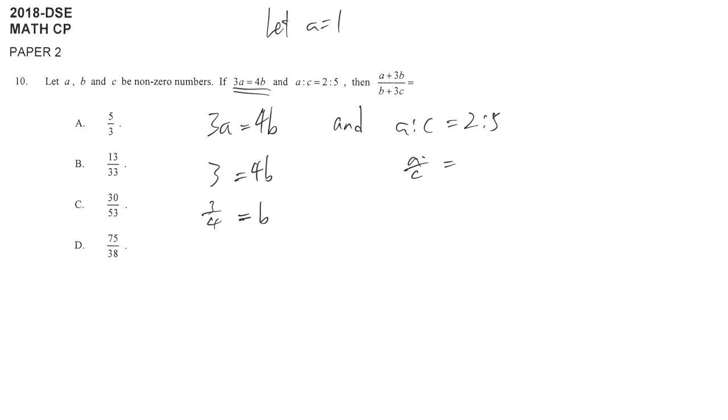A over C equals 2 over 5, which means 1 to C is 2 over 5. So 5 equals 2C, and C equals 5 over 2.